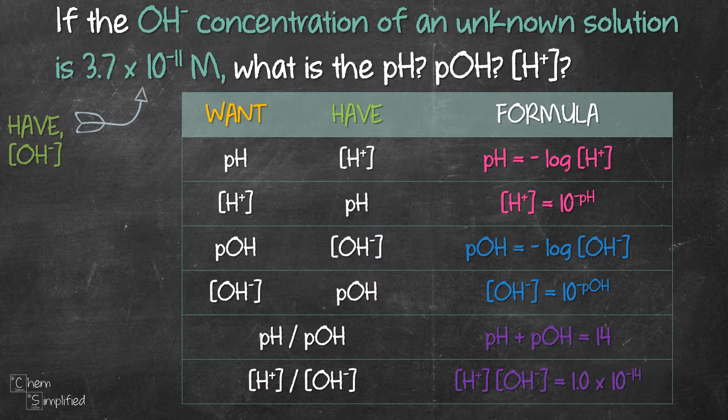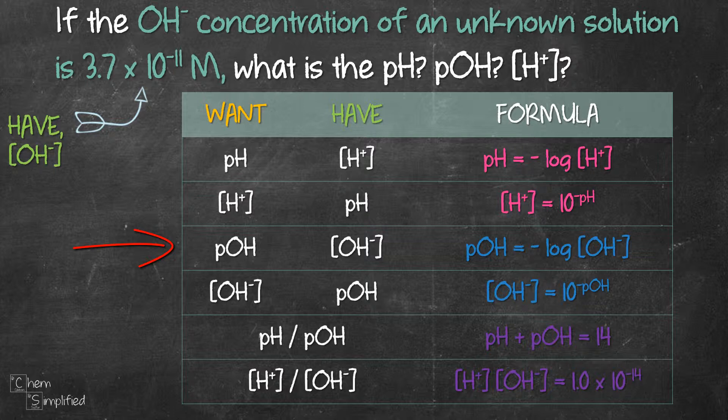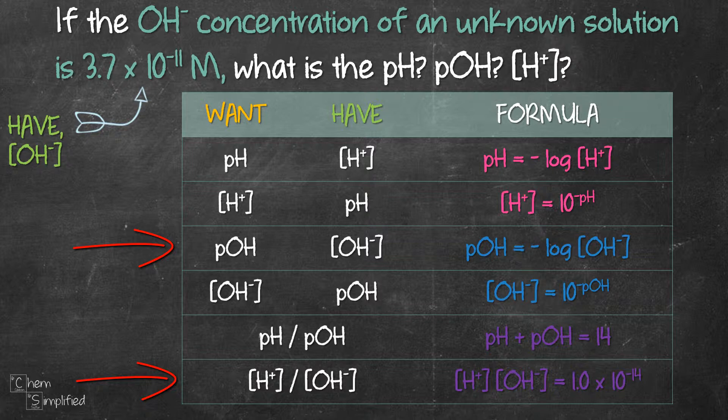Since we have the concentration of OH-, we can use this formula and we'll be able to find the pOH. Alternatively, we can also start with this formula and we can find the concentration of H+. Now it doesn't matter which formula we start with because we need to find both values anyway. So I'll just start with the first formula.